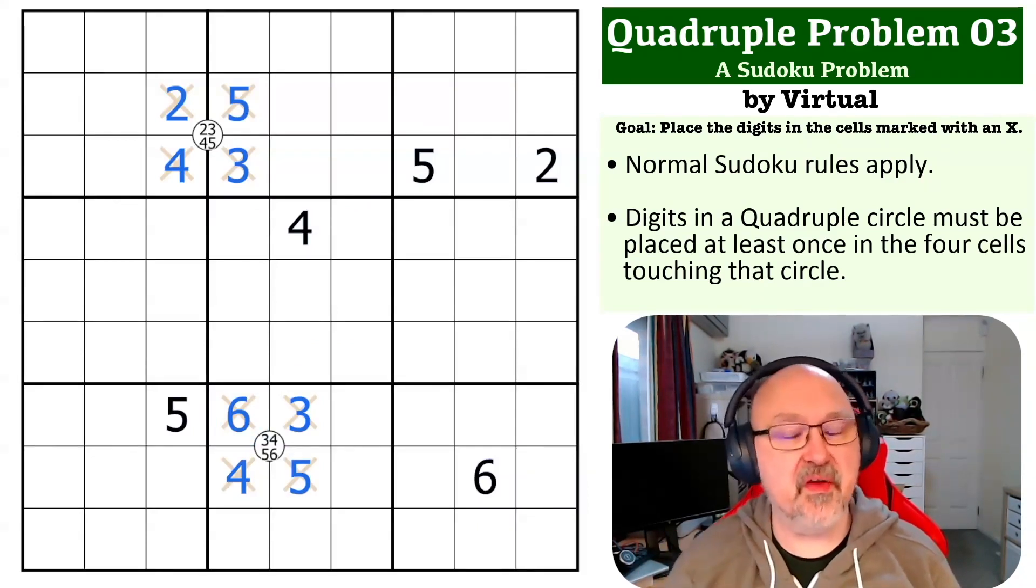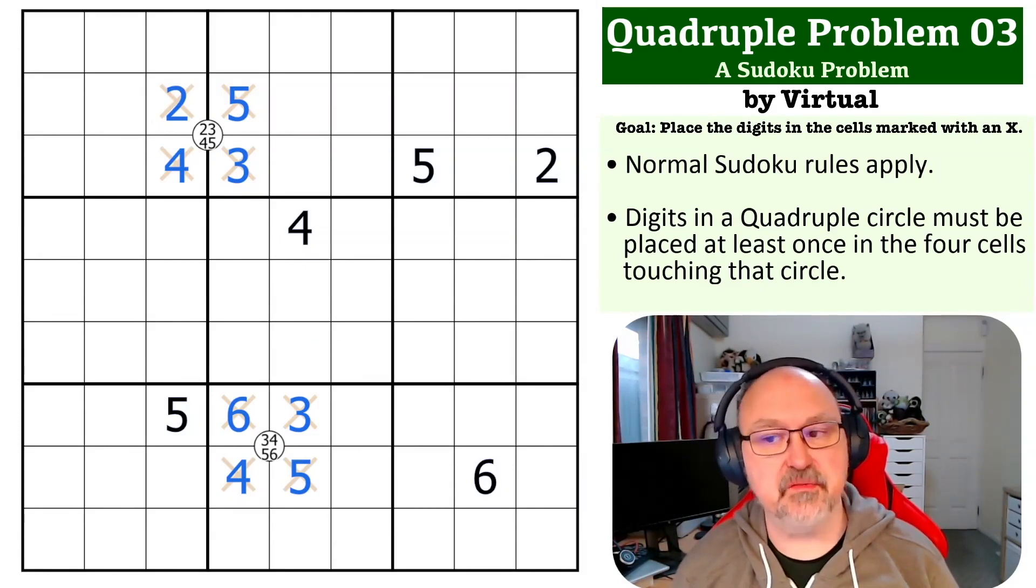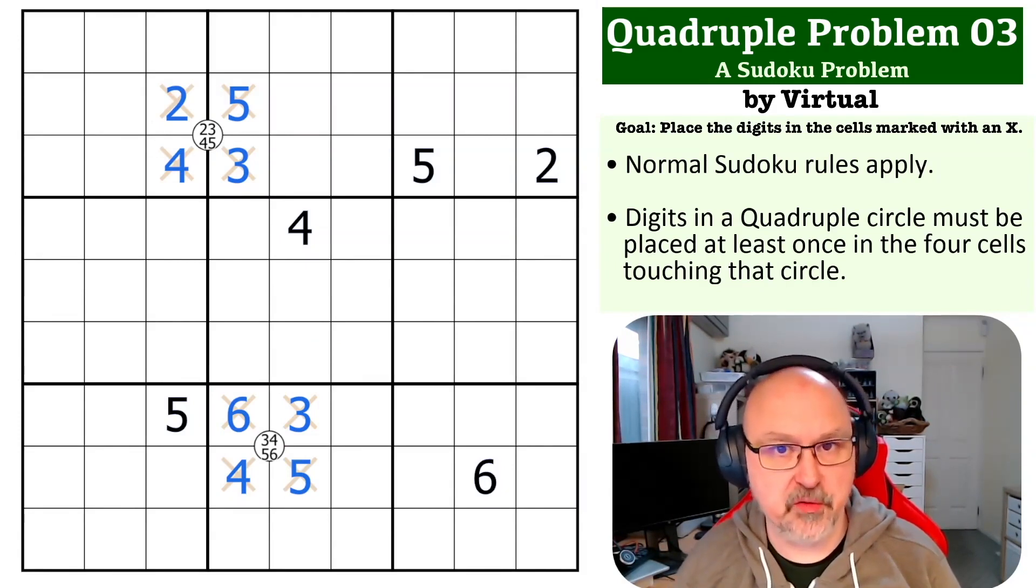There's probably another set of ways that you could look at this, but basically what you're doing is you're using the given digits to bounce around and make eliminations around the quadruples.